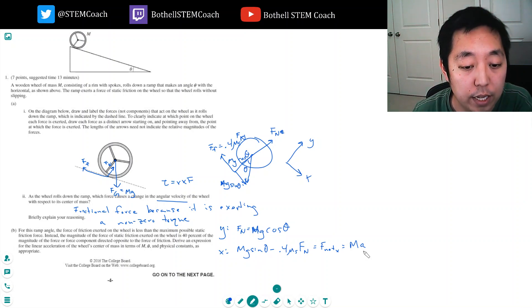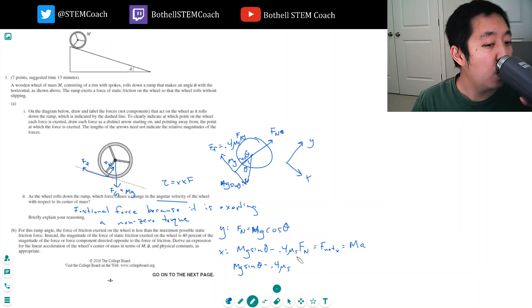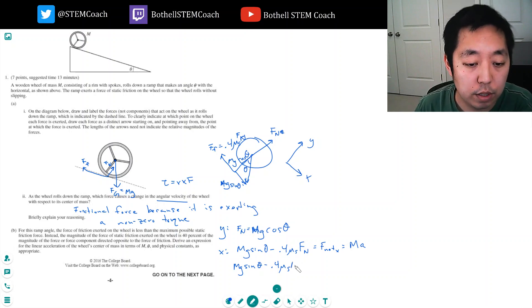So we're solving for A in this case. So let's, this is still mg sine theta minus 0.4 static friction. M actually cancels in all of this. So I can have G times sine theta. I can factor out a G minus 0.4 static friction cosine theta equals A. Okay.